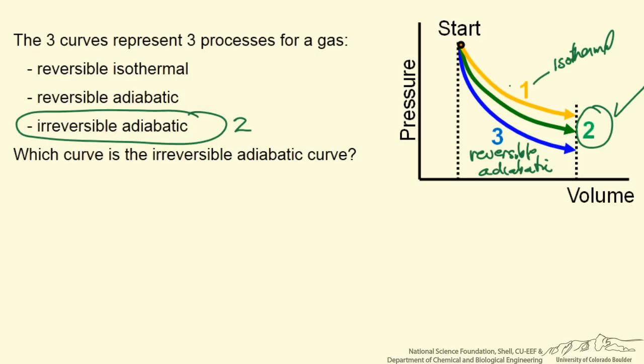For the reversible adiabatic process, the temperature is lowered, and for the isothermal, because we removed energy in the form of work, that meant the internal energy is lower, therefore the temperature is lower for the gas. Lower temperature at a given volume corresponds to a lower pressure—just visualize that from the ideal gas law.